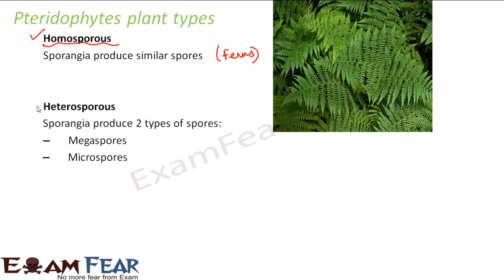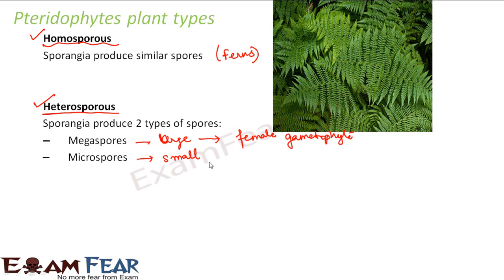In heterosporous plants, the spores produced are not similar — some spores are larger (megaspores) and others are smaller (microspores). Megaspores germinate to form the female gametophyte, and microspores germinate to form the male gametophyte. The female gametophyte produces female gametes and the male gametophyte produces male gametes, which then fuse to form the zygote.